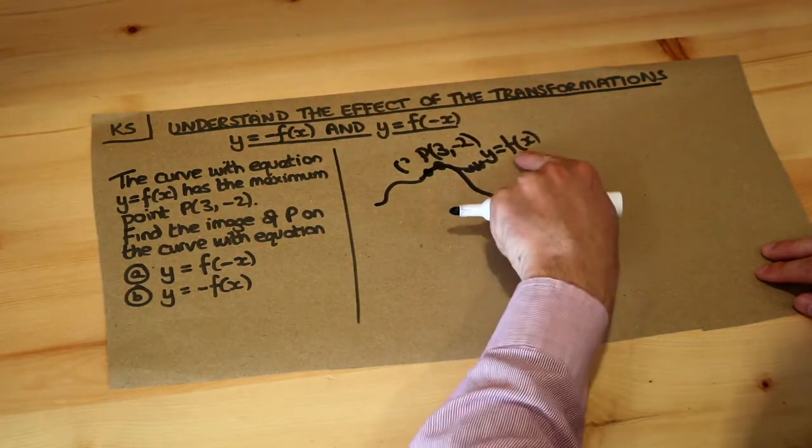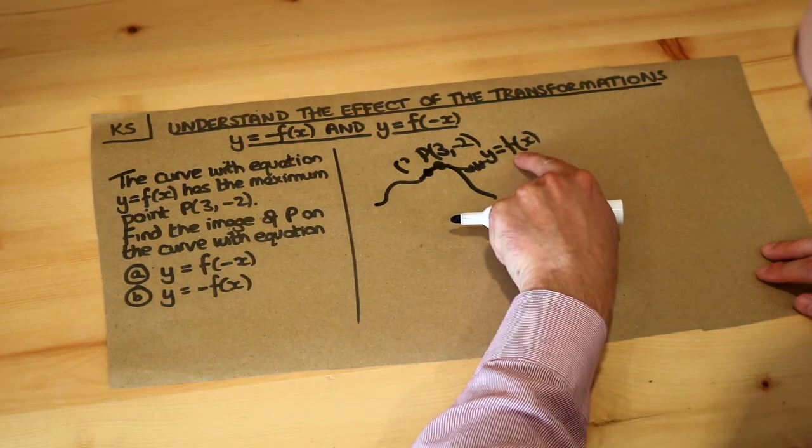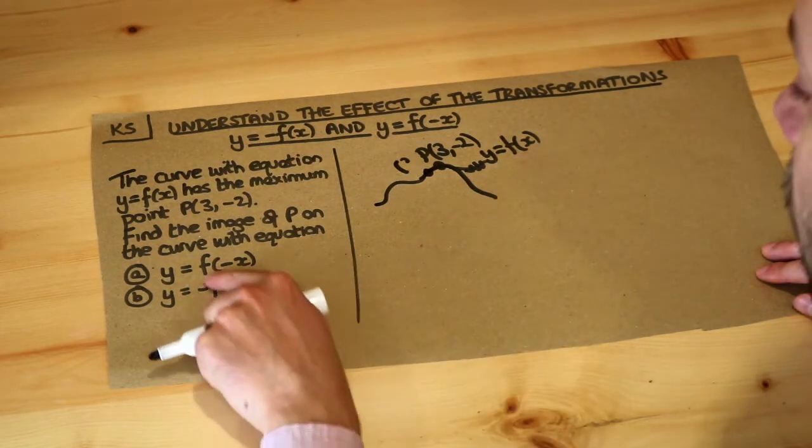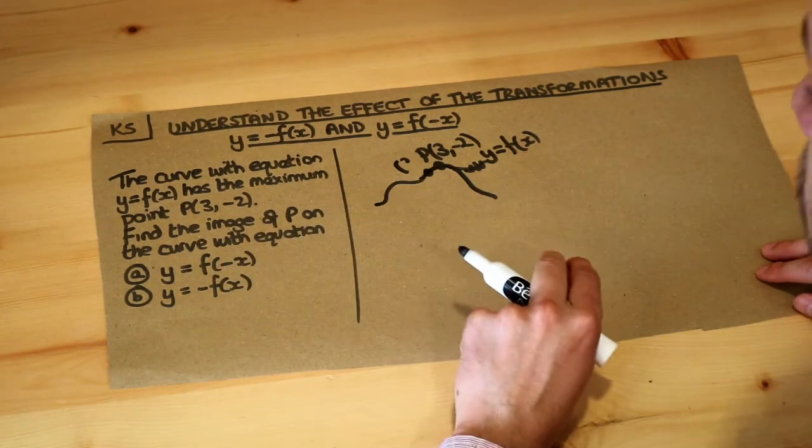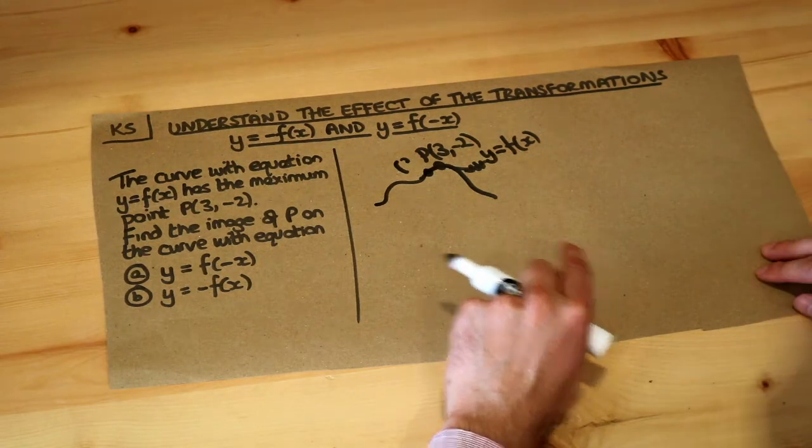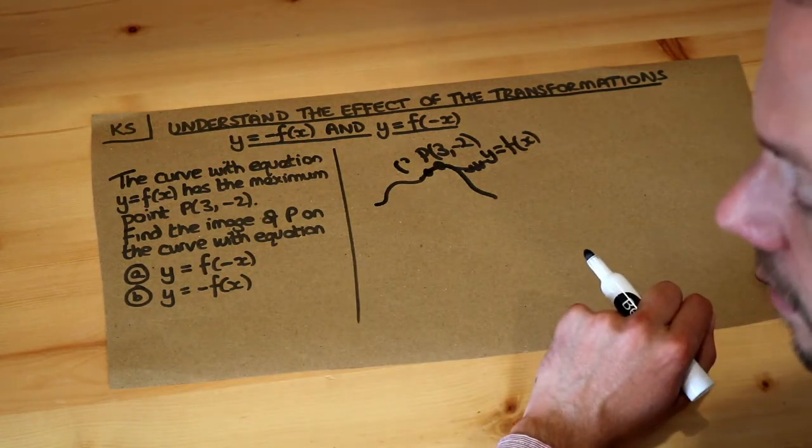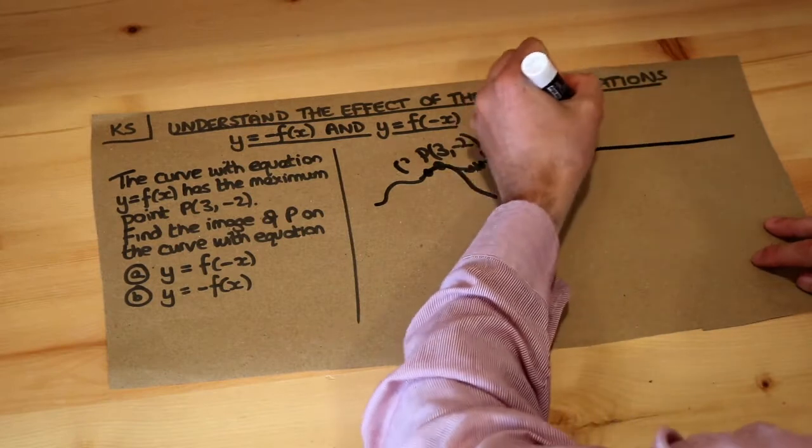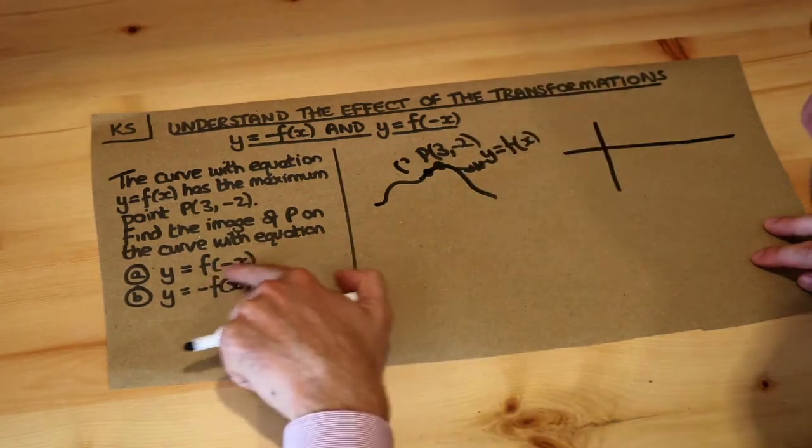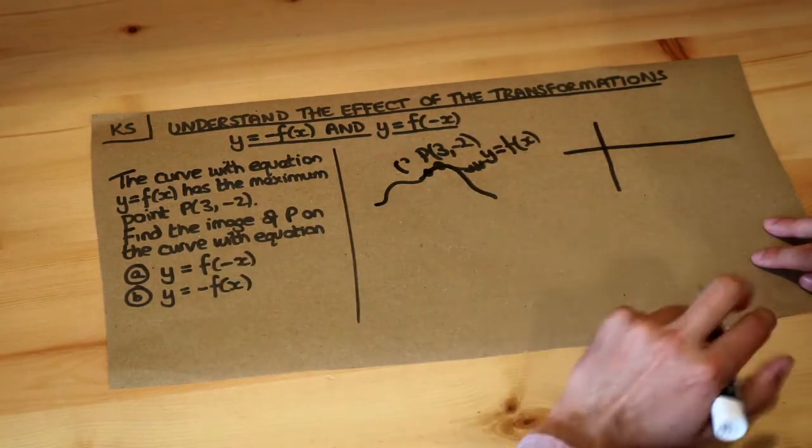Now we're modifying this expression in some way. Whatever f is, whatever that expression in terms of x is, we're changing it slightly to get a new expression in terms of x and we want to know what is happening to that.